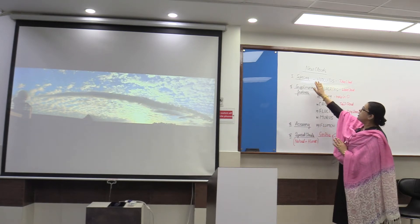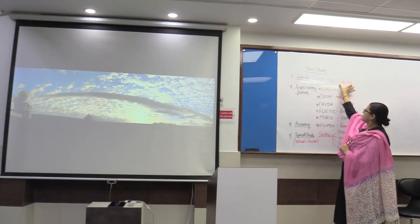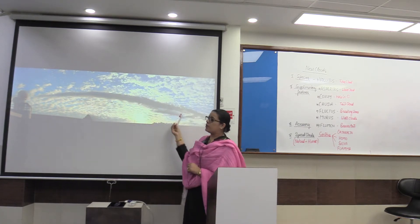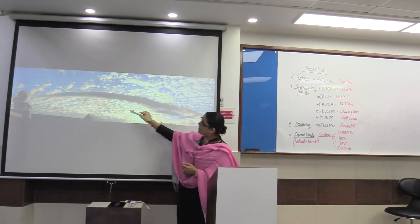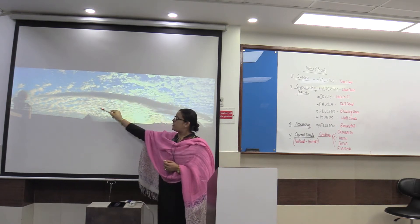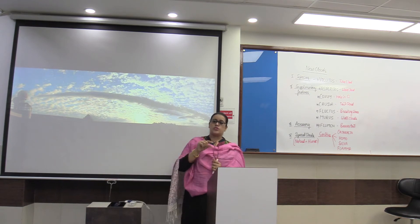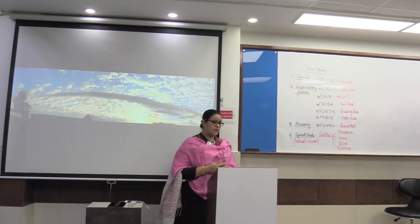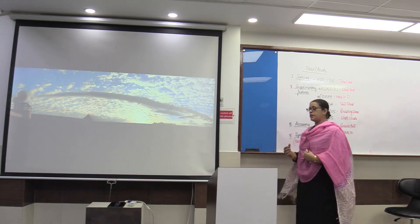Going through each one by one. The new species of cloud that has been added is called volutus cloud. This tube cloud is largely related to the mid-altitudinal cloud. Mid-altitudinal clouds include altocumulus and altostratus, and this tube cloud can also be related to stratocumulus — the low-altitudinal cloud. So it is a new species that has been added, called volutus cloud. Its characteristics overlap with the supplementary cloud.